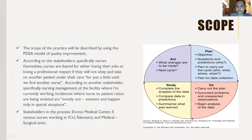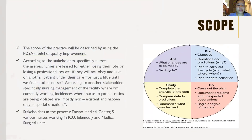The scope of practice will be described using the PDSA model of quality improvement — Act, Plan, Study, and Do. According to stakeholders, specifically nurses themselves, nurses fear losing their job or professional respect if they do not comply and take on an additional patient temporarily until a nurse is found. This especially happens with discharges, where nursing managers or supervisors tell nurses they can take on one more patient while discharging another. According to nursing management at the facility where I'm currently working, incidences where nurse-to-patient ratios are violated are mostly non-existent and happen only in special situations.